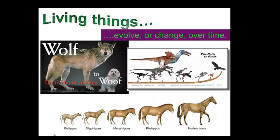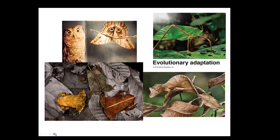Living things evolve in their environment, or change over time. Evolutionary adaptations occur over many generations as individuals respond to their environment by having the greatest reproductive success. Here are some examples of unique evolutionary adaptations: the moth mimicking the eyes of the owl, the insect that looks like a leaf, as well as the lizard and the frog in the other pictures.